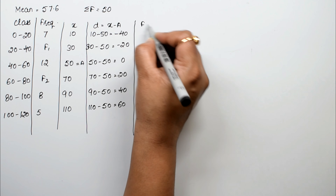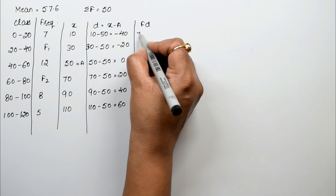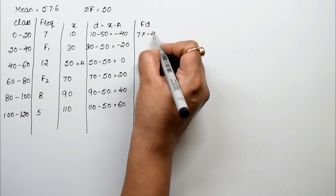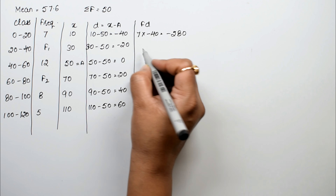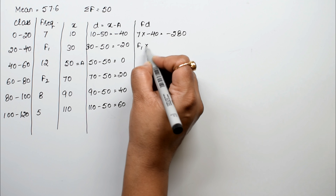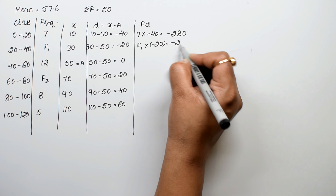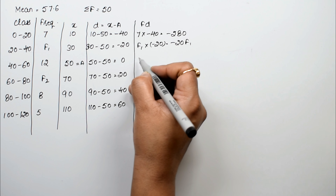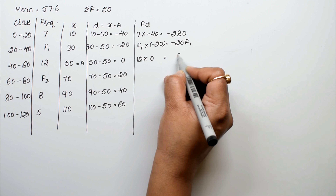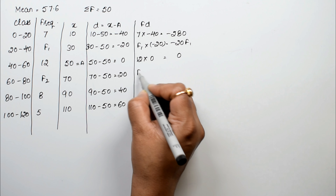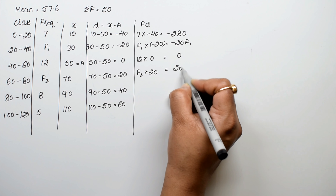Now we calculate fd, that is f multiplied by d. So 7 multiplied by minus 40 equals minus 280, f1 multiplied by minus 20 equals minus 20f1, 12 into 0 equals 0, and f2 into 20 equals 20f2.